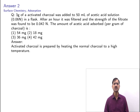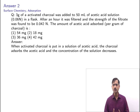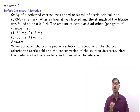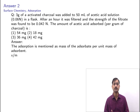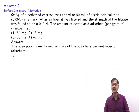Activated charcoal is prepared by heating normal charcoal to a higher temperature, which removes gas molecules from its surface and makes it free to adsorb other substances. When activated charcoal is put in acetic acid solution, it adsorbs the acetic acid and the concentration decreases. Here, acetic acid is the adsorbate and charcoal is the adsorbent. Adsorption is expressed as mass of adsorbate (X) per unit mass of adsorbent (M).